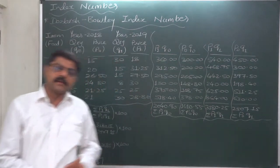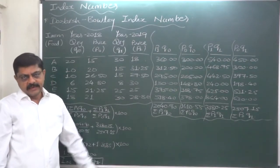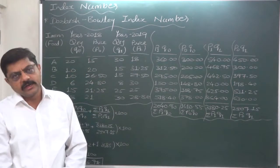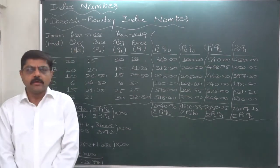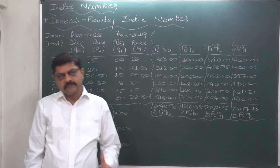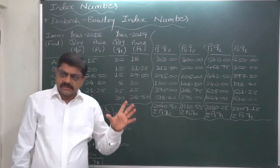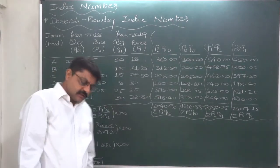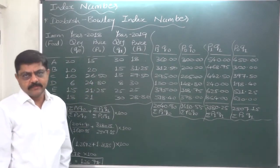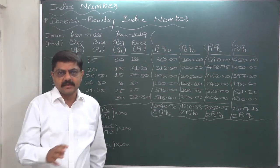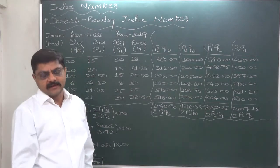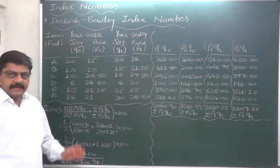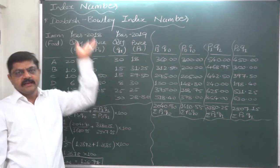Using the same data allows you to compare the final values of different index numbers, making it easier to understand all of them. I always suggest to my students that for the first three or four cases, use the same data for calculating all the different index numbers. When you are studying this for the first time or from an examination point of view, it is the best method to calculate all index numbers for a single dataset when practicing the chapter.